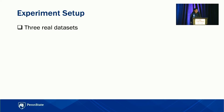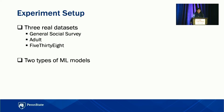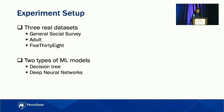For the experiment setup, we used three real datasets — the General Social Survey, the Adult dataset, and the 538 dataset — these are also used in existing research. We trained different types of ML models to understand the generalizability of our attack, including decision tree models and deep neural network models. We also used a big ML platform for training these models, which is a big tech company that provides ML-as-a-service and makes the models public once trained.